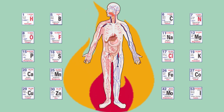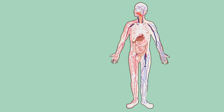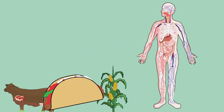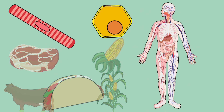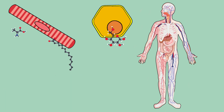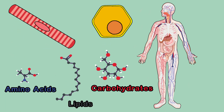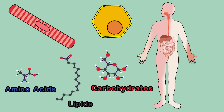Have you ever wondered how our body obtains energy in atoms? It may surprise you to learn that we get them by eating other cells. To extract their inner energy-rich molecules, we must break them apart into little molecules that our cells can absorb. This physiological process is known as digestion, and is carried out by our digestive system.